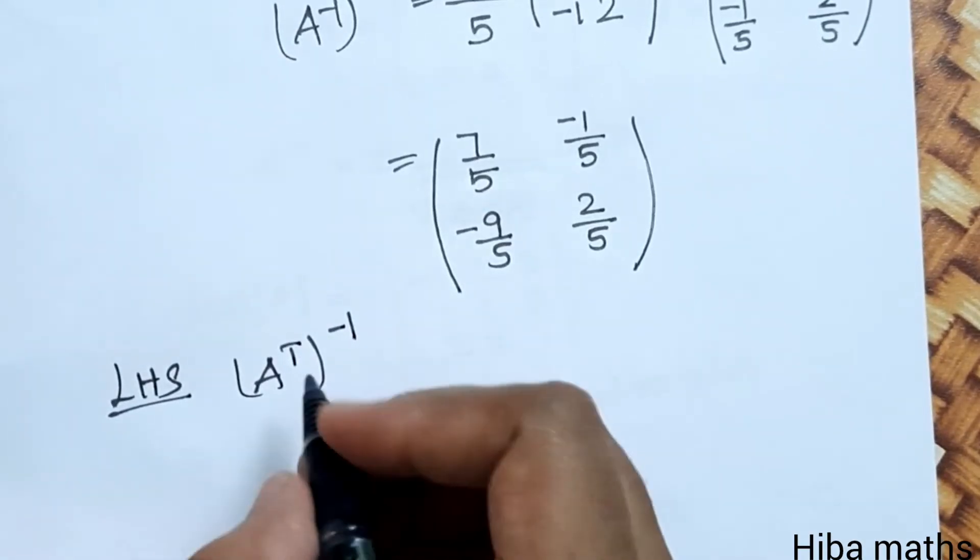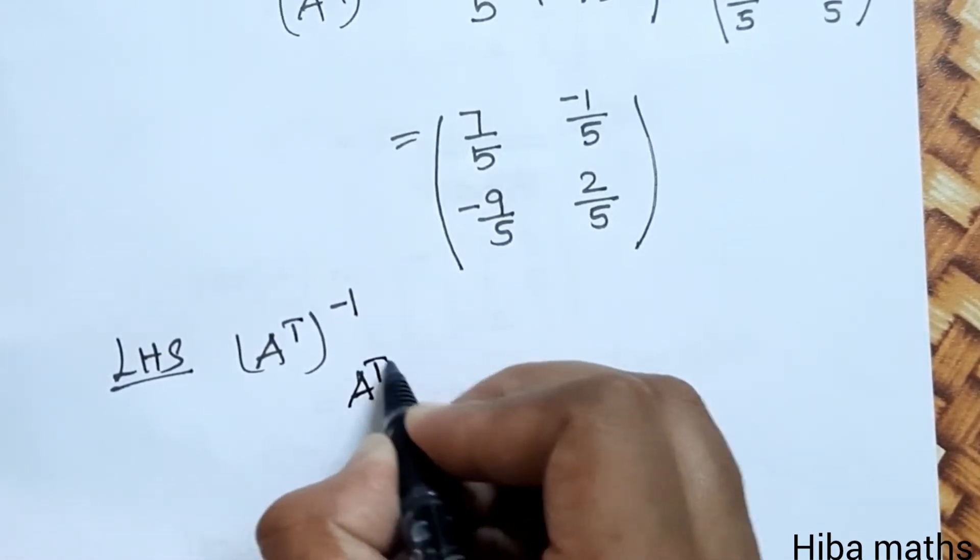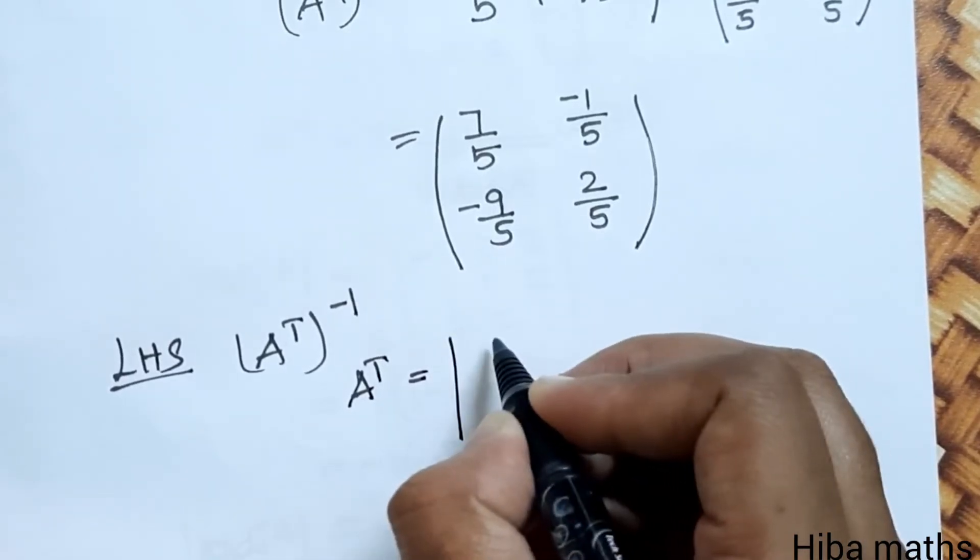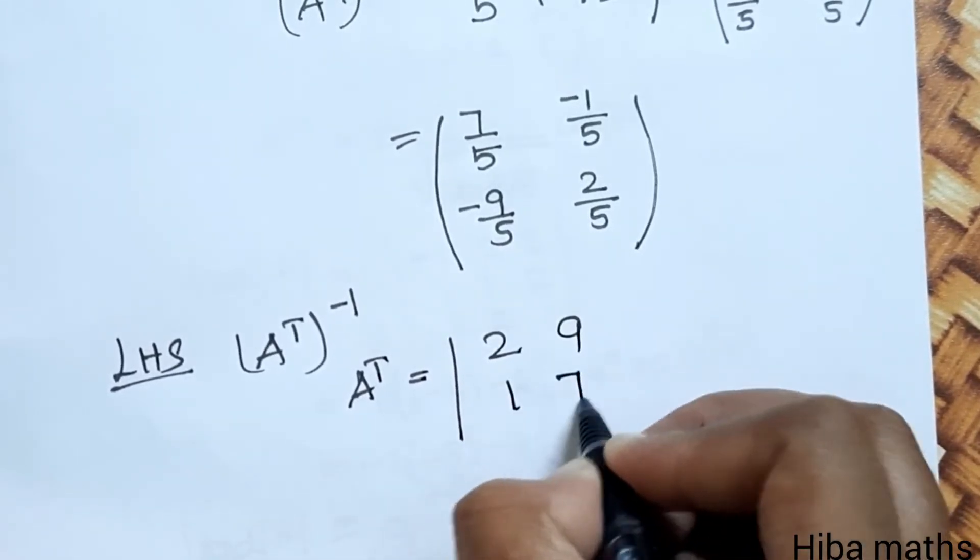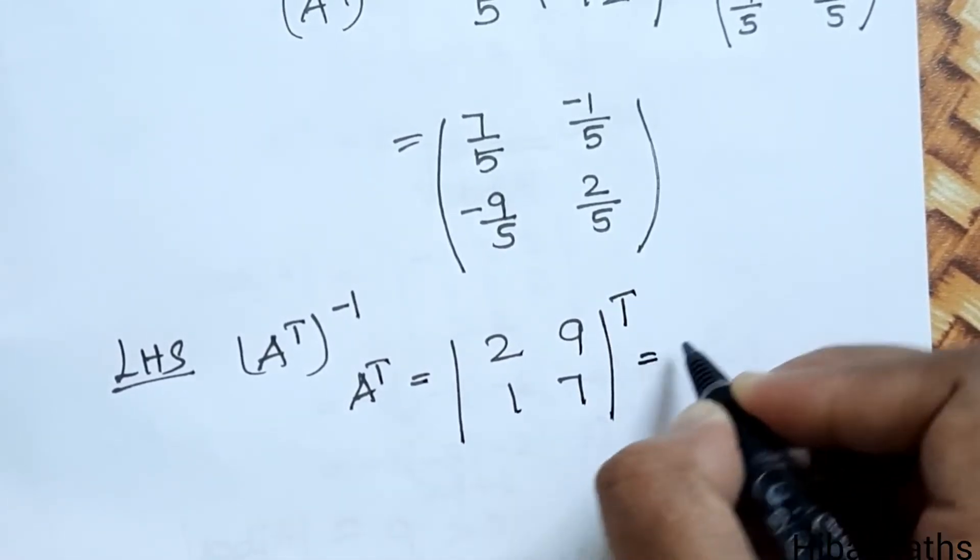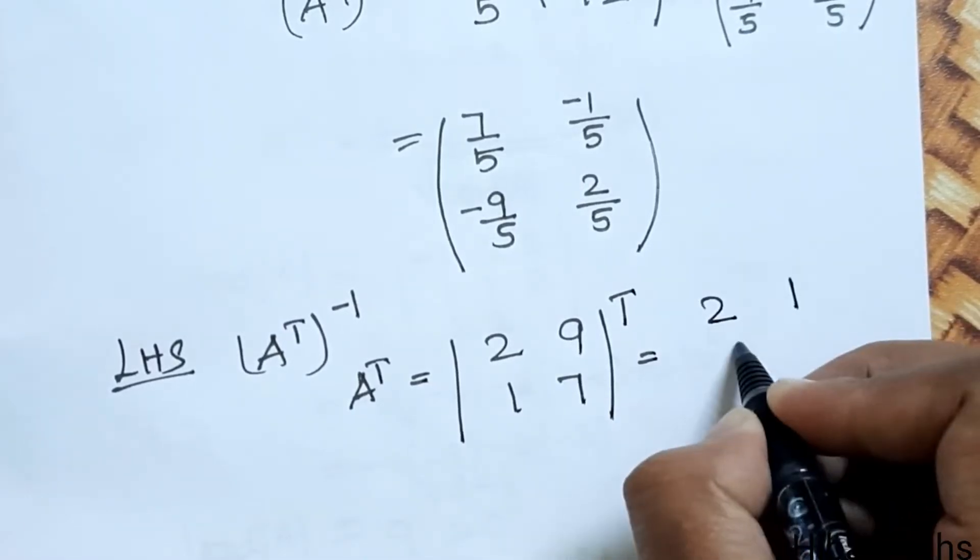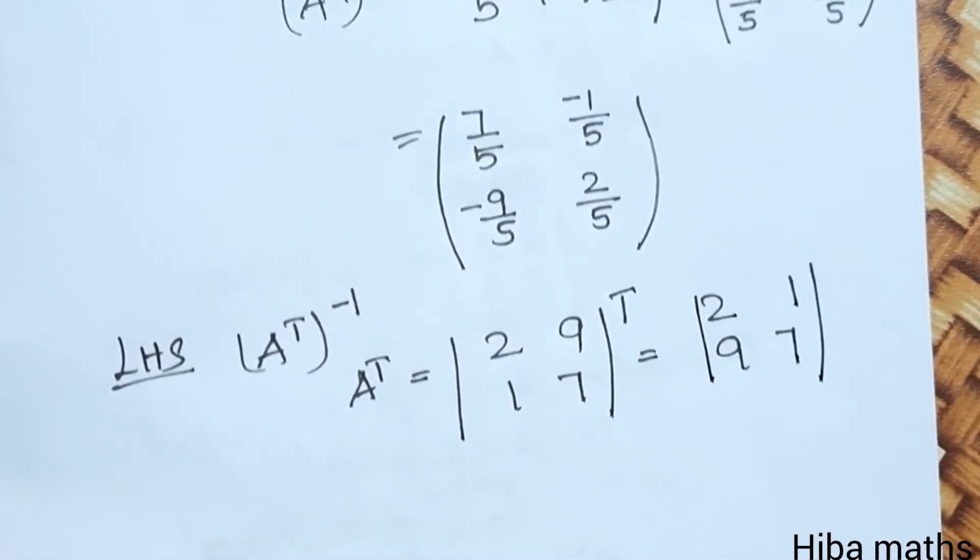The LHS is A transpose. To choose A transpose: the transpose is 2, 9, 1, 7 becomes 2, 1, 9, 7. So A transpose is the matrix [2, 1; 9, 7].